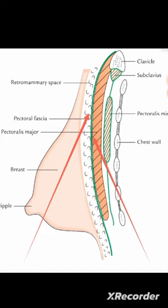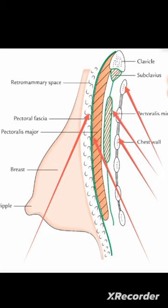The chest wall with the ribs is visible here. Pectoralis minor does not form the breast bed because it lies underneath the pectoralis major — you have to remove pectoralis major during dissection to see pectoralis minor. The true retromammary space lies between the breast and the pectoral fascia.